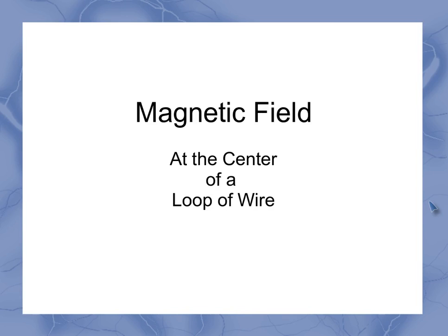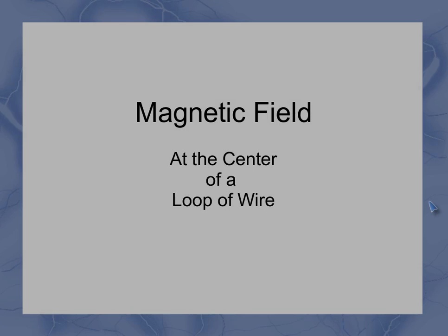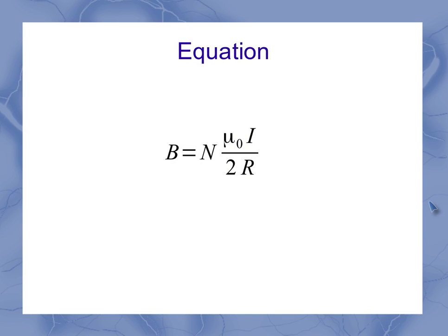Now we can look at the magnetic field at the center of a loop of wire which is carrying a current. Here's the equation we're going to be working with for this one.